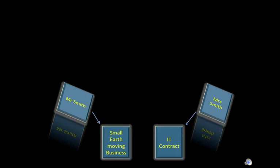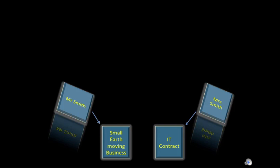Mr. Smith is a hometown and runs a small earth moving business. The business is a modest operation but it is a business. Mrs. Smith is an IT consultant. She is on a high income and all her income comes from one large contract. Mrs. Smith does not pass the PSI rules.